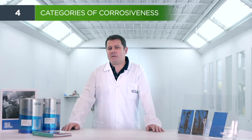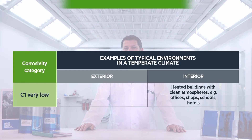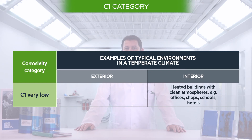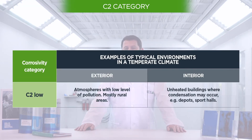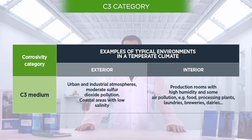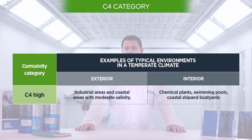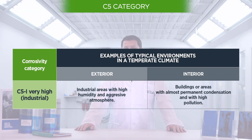This standard establishes different categories according to the environment, ranging from C1 to CX. C1 is applicable to heated places with clean atmospheres such as shops, office interiors, etc. C2 is applicable to low pollution areas such as rural areas, sports centres, warehouses, etc. C3 is applicable to areas of moderate pollution such as urban areas or areas of high humidity. C4 is applicable to industrial areas and low salinity areas such as swimming pools or shipyards. C5 is applicable to industrial areas with high humidity and aggressive environments and coastal areas with high salinity.